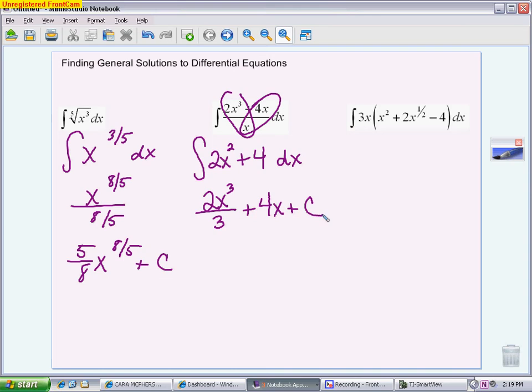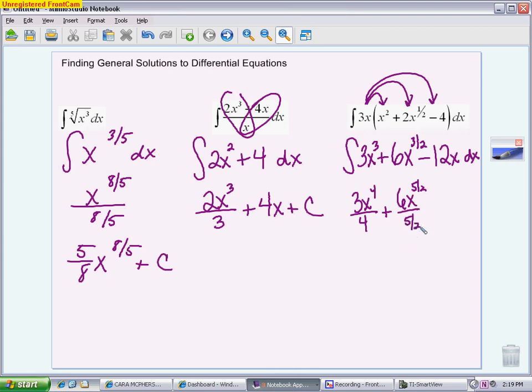The third one, the reason I wanted to show you this, is there is no such thing as a product rule for integration. So you have to get rid of parentheses. Any time you're asked to integrate something and you have a parentheses present, right now we have to distribute. When you distribute, 3x times x squared is 3x to the third. 3x times 2x to the 1 half is 6, and then you have to add the exponents. So you have 1 plus 1 half is 3 halves, and then minus 12x. Getting rid of the parentheses, allowing you to go term by term and use your power rule. So the integral is 3x to the fourth over 4 plus 6x to the 5 halves over 5 halves minus 12x to the second over 2.